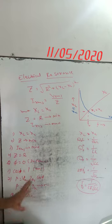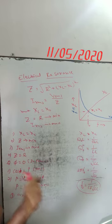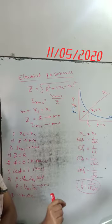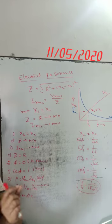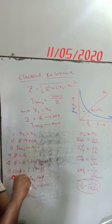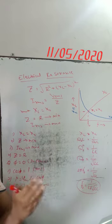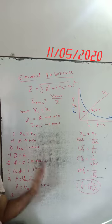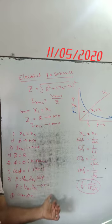The resonance circuit is used as an acceptor circuit or filter circuit. It is used in TV, radio, and communication systems as a tuner. For example, in a TV it selects a particular frequency of a channel and filters out unwanted frequencies. Hence it is used as an acceptor circuit or filter circuit. These are all the characteristics of the resonance circuit.